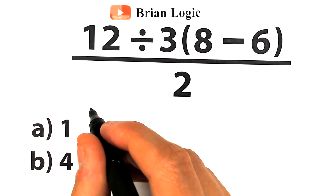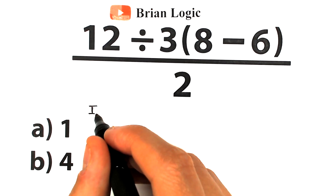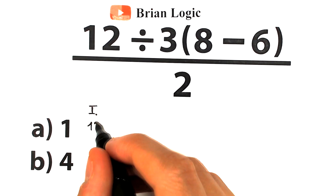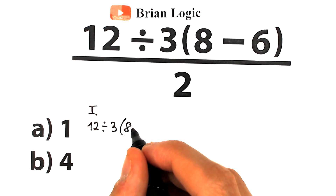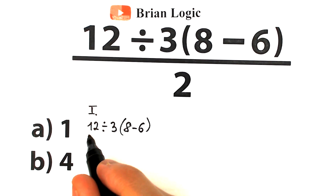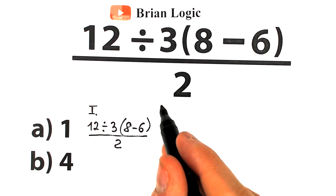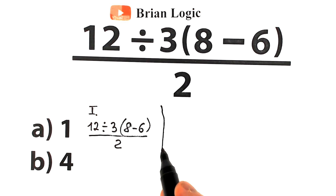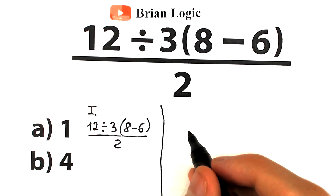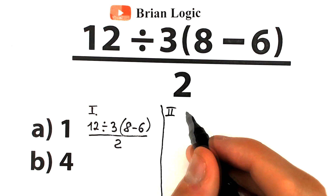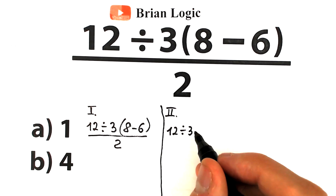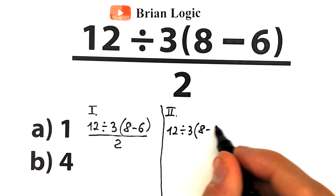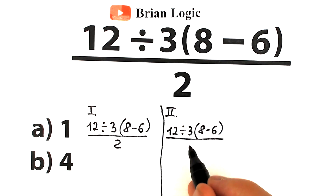First of all, I want to divide this into two cases. Right here we have the first interpretation: 12 divided by 3, times (8 minus 6), and we divide all of these by 2. I want to write the same expression again so it looks like our second interpretation. We have two absolutely identical expressions — two same expressions.